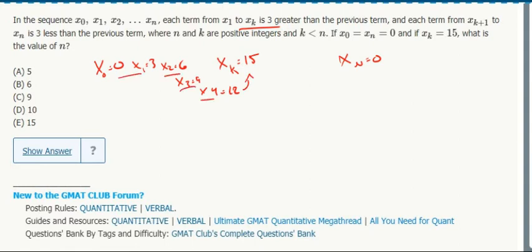I counted up by 3, and then we need to count down by 3. xₖ I guess would be 5, so x₆ is 12, x₇ is 9, x₈ is 6, x₉ is 3, and then that gets us back to xₙ is 0.